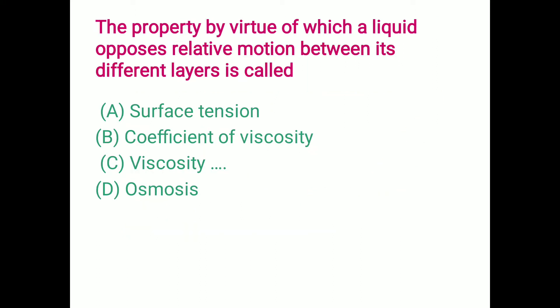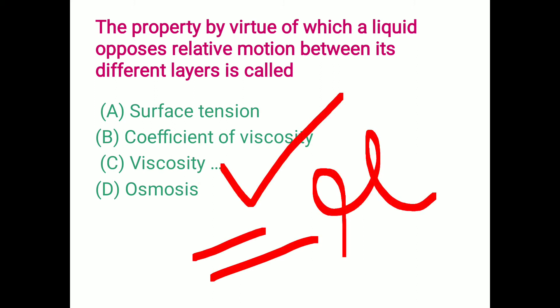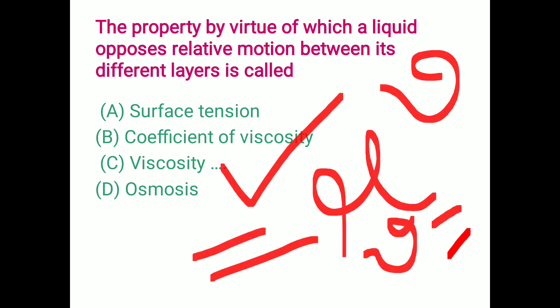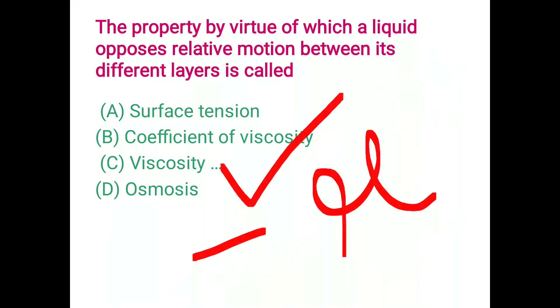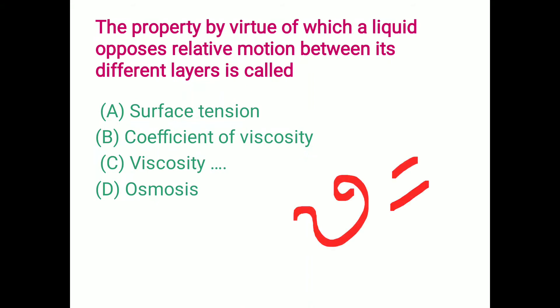The property by virtue of which a liquid opposes relative motion between its different layers is called: surface tension, coefficient of viscosity, viscosity, or osmosis. The correct answer is viscosity, denoted by mu. We have dynamic viscosity and kinematic viscosity. The relation between them is: kinematic viscosity (nu) equals dynamic viscosity (mu) divided by density (rho).